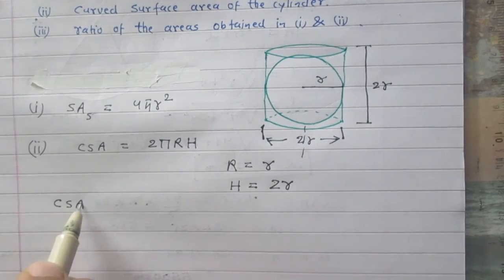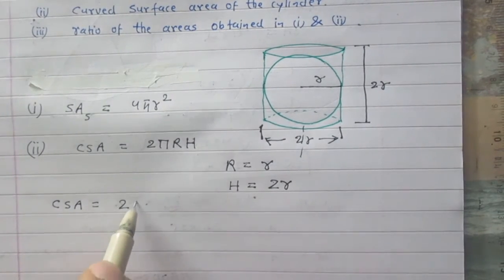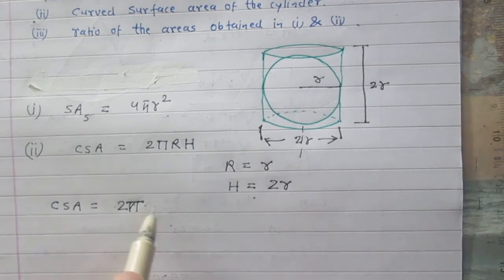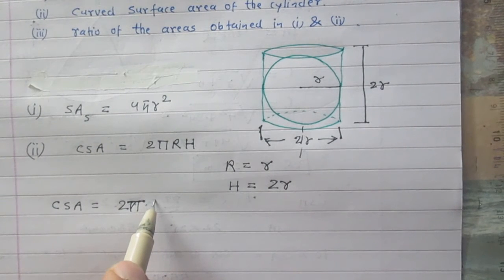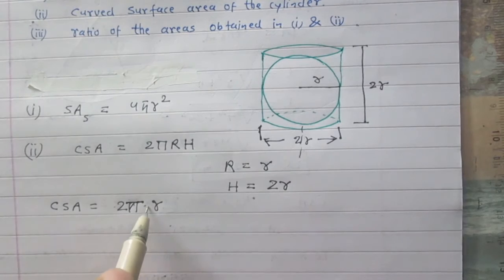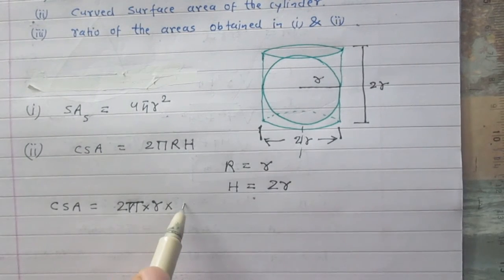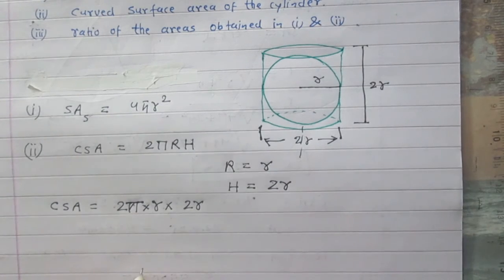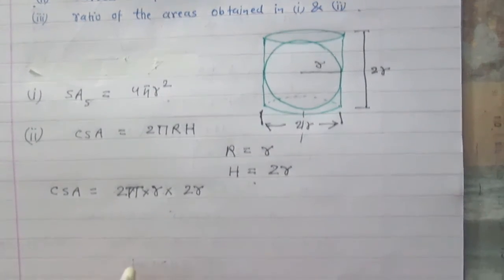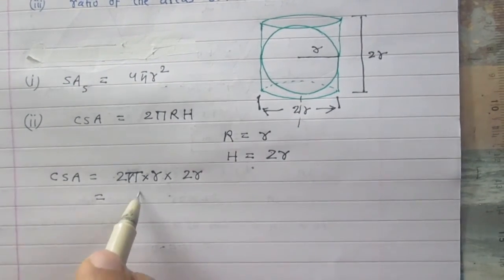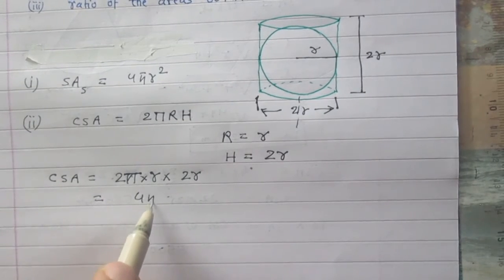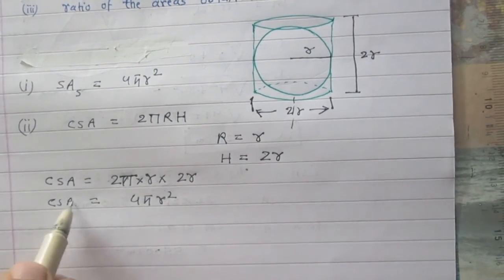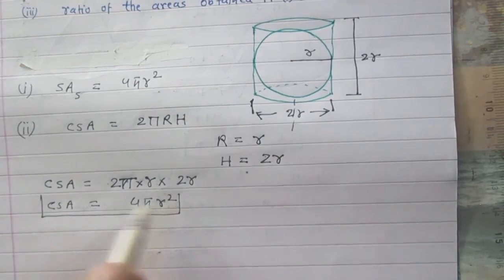After substituting these values in the formula, curved surface area of the cylinder equals 2π × R (radius, also equal to the radius of the sphere) × H (height of the cylinder, equal to the diameter of the sphere, which is 2R). After calculation, you get 4πR².